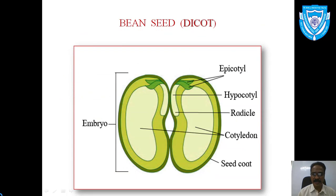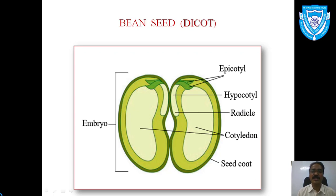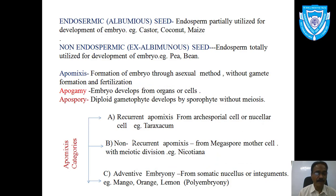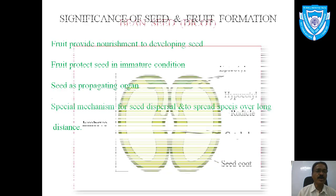Looking at the structure of the bean seed — a dicot seed — it has two parts. The embryo includes the epicotyl toward the upper region, followed by the hypocotyl below it, and then the radicle. The radicle eventually gives rise to the root. The lower portion has two cotyledons, and the surrounding protective covering is called the seed coat.